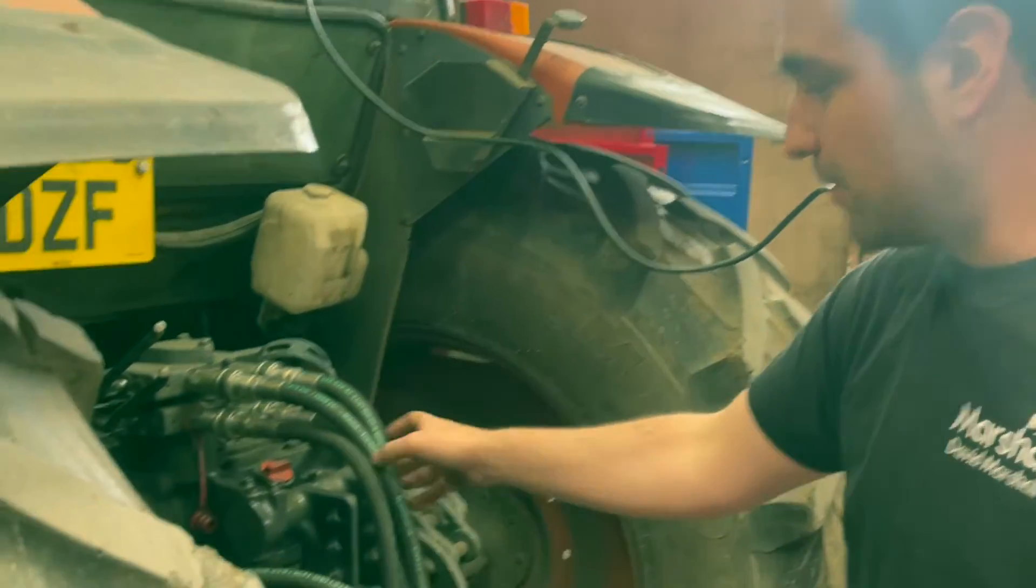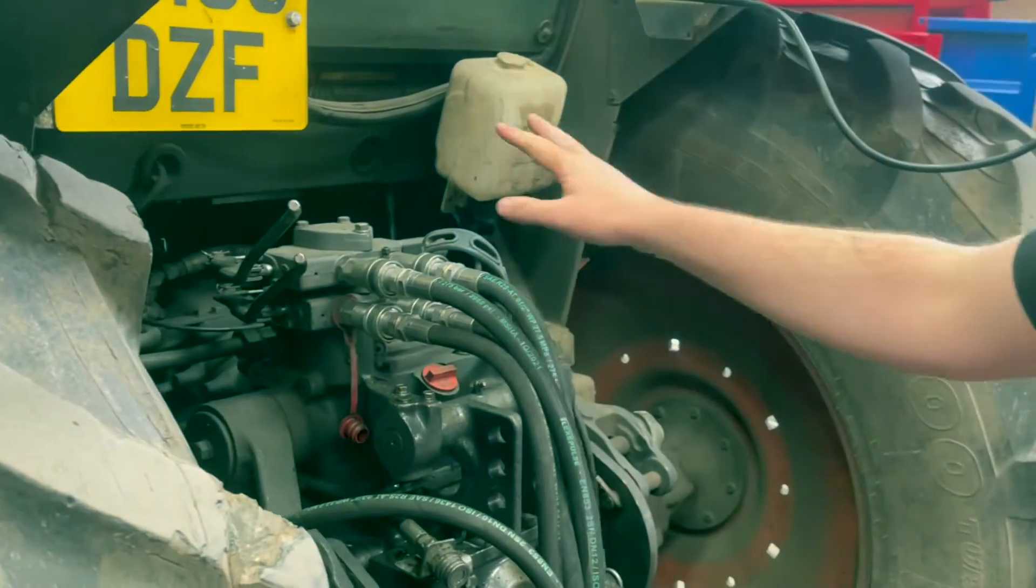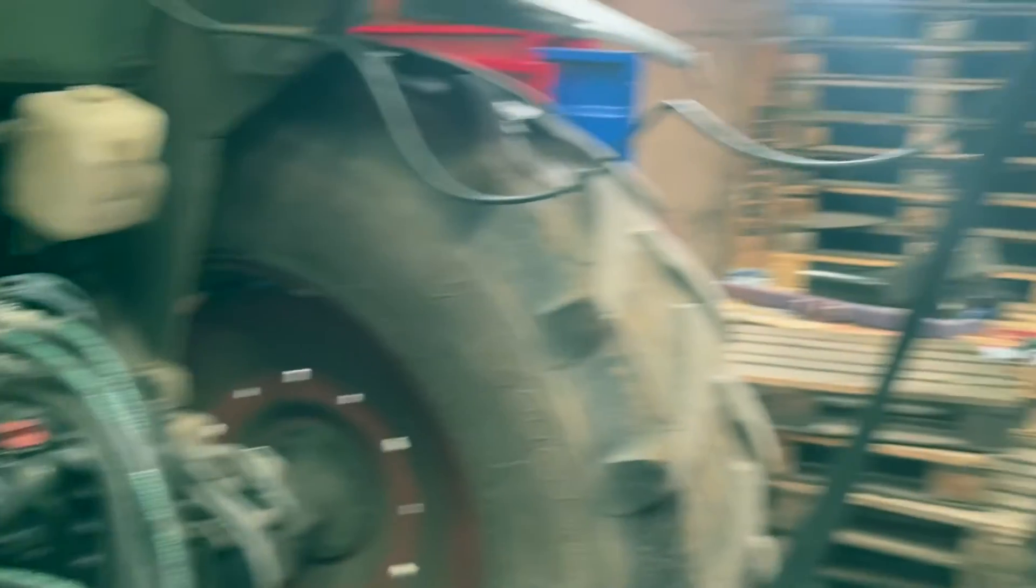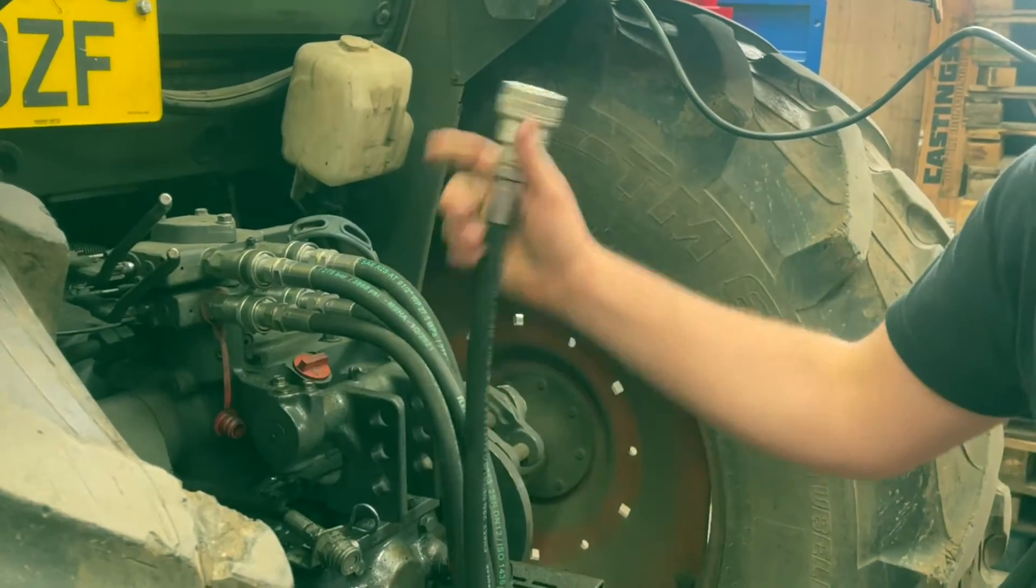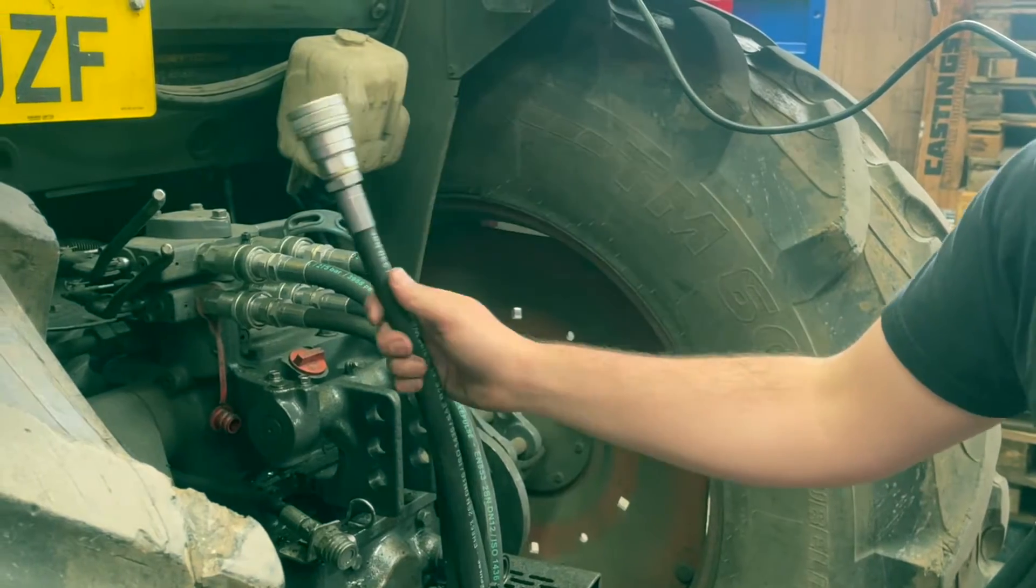It's also important to make sure you have the correct hoses and the correct spool. Two for the pushing ram, two for the slurry door, and obviously your brake pipe connected to the brake coupling on the tractor.